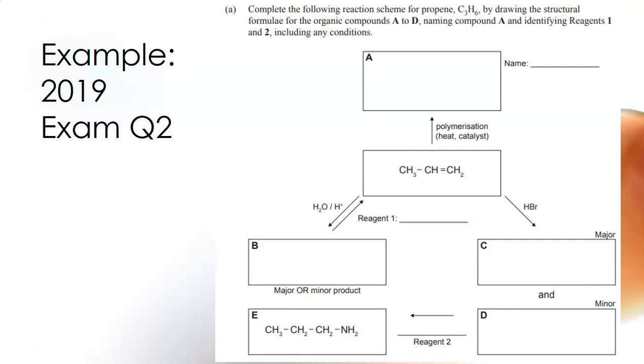If we look down now going to compound B we've got a reagent there which is water with H+ and we're told that it's got to form a major or minor product. Now remember I said when you've got a major or minor product it's got to be an addition reaction and it's got to be making either an alcohol or a haloalkane. Now if I look at H2O then I can't make a haloalkane from H2O because there's no halogen in there so therefore compound B must be an alcohol.